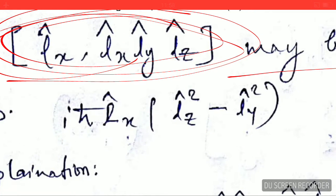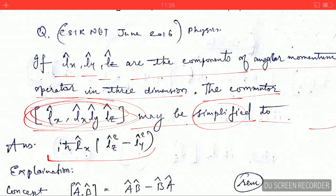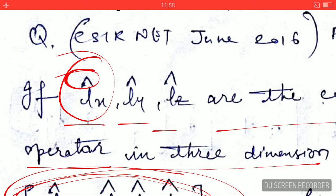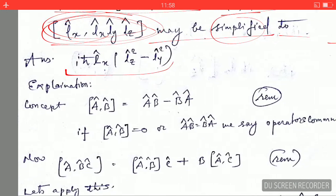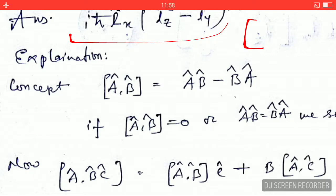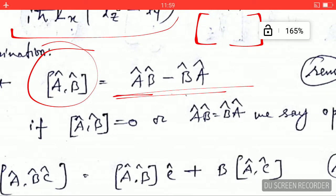This commutator can easily be simplified to this form — let's see how. First, operators in quantum mechanics have a cap over the letters, so if there is a cap, you can understand that it is an operator. The commutator has two things inside enclosed in square brackets. The commutator of A and B is represented as AB minus BA.